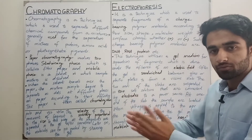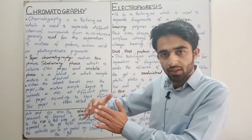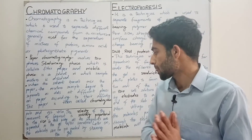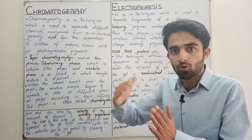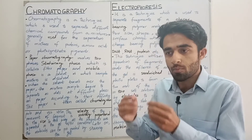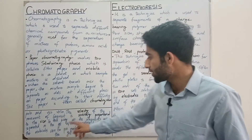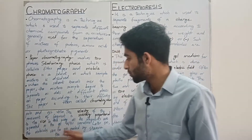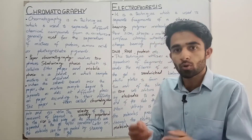Jo positive pole hai uski taraf hamare sample mein gel mein jo negative charge molecules hain woh jayenge, aur jo positive charge molecules hain woh negative pole ki taraf move karenge. The velocity of the movement of fragments is inversely proportional to the size - yani ki jis molecules ka size small hoga unki movement zyada hogi. Is tarah in this way all the fragments are separated in the gel after some time, aur baad mein molecules ko gel ko stain karke pinpointed kar sakte hain.